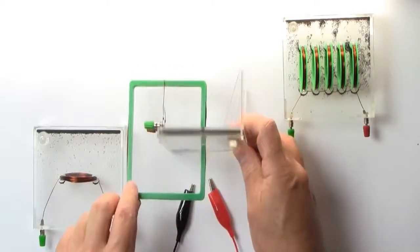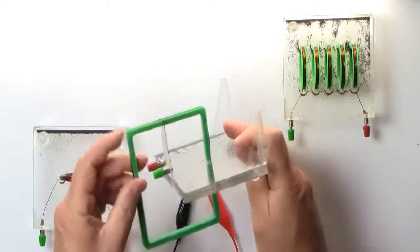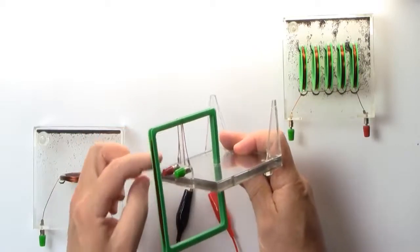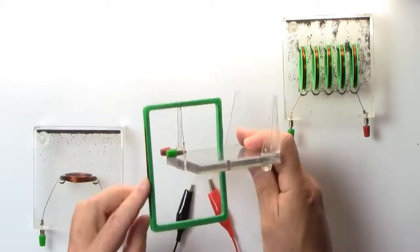They loop around, they go straight through the plate in the center there, and you can see that the two ends of the coil are terminated on these posts here.